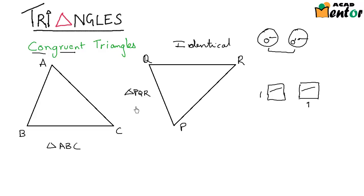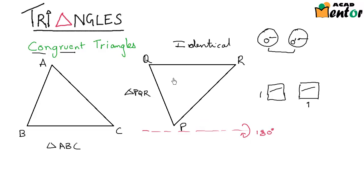If you just look at them at a glance, they do not look identical at all. But what if I take an axis here and rotate triangle PQR about this axis by 180 degrees? What I am essentially doing is keeping point P constant and just moving these two points down.